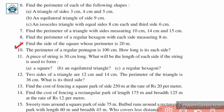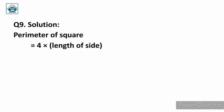Question number nine: find the side of the square whose perimeter is 20 meter. We are given the perimeter and need to find the side. The formula is: perimeter of a square equals 4 into length of side. Substituting, 20 meter equals 4 into length of side.